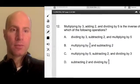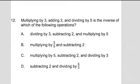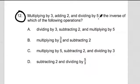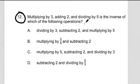So let's take a closer look and let me know what you think. The first thing we want to do is read over the problem. Number 12: Multiplying by 3, adding 2, and dividing by 5 is the inverse of which of the following operations? And then it gives us a whole bunch of different operations. We could divide by 3, subtract 2, and multiply by 5. We could be multiplying by 3 fifths and subtracting 2. Multiplying by 5, subtracting 2, and dividing by 3, or subtracting 2 and dividing by 5 thirds.